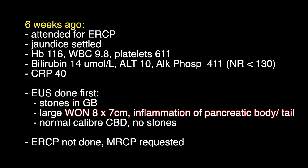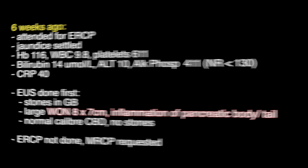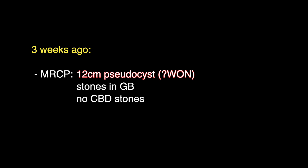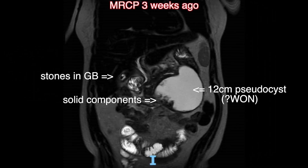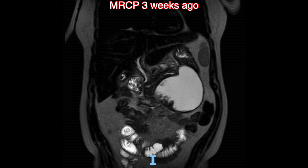Hence an ERCP was not performed on that day and instead an MRCP was requested. She attended for her MRCP three weeks ago. This showed a 12 centimetre pseudocyst. There were stones within the gallbladder but not within the common bile duct. There were some solid components within the cyst. Therefore it may be a wall of necrosis rather than a pseudocyst according to the Atlanta 2012 classification. In any case there is a large fluid component and I'll continue to call it a pseudocyst for the purposes of this presentation.